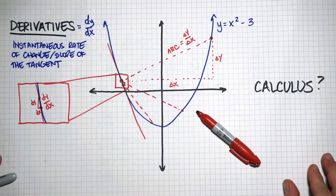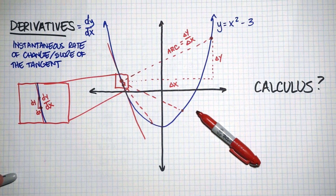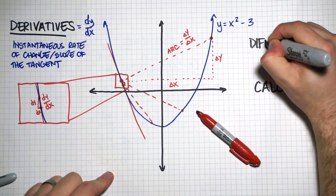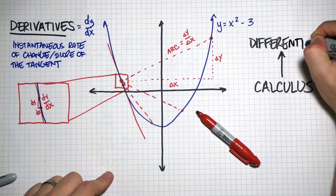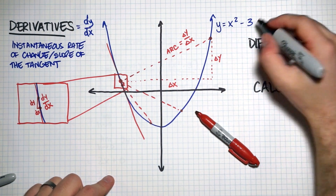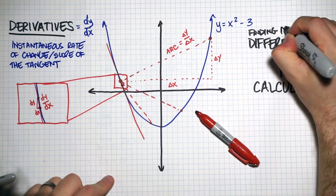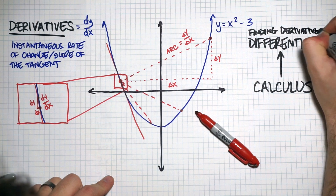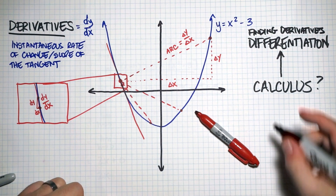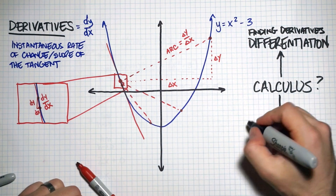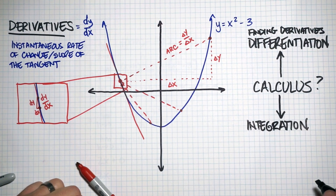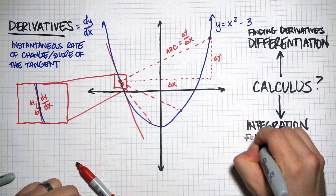Now to look at a few other terms. What is calculus? Calculus basically has two parts. One part, which is the focus of this course, is called differentiation — and all differentiation is, is a fancy word for finding derivatives, finding the slope of the tangent at any point. The other part, which we won't cover in this course but you may see in future calculus courses, is called integration — which instead of finding slope, finds the area below a curve.